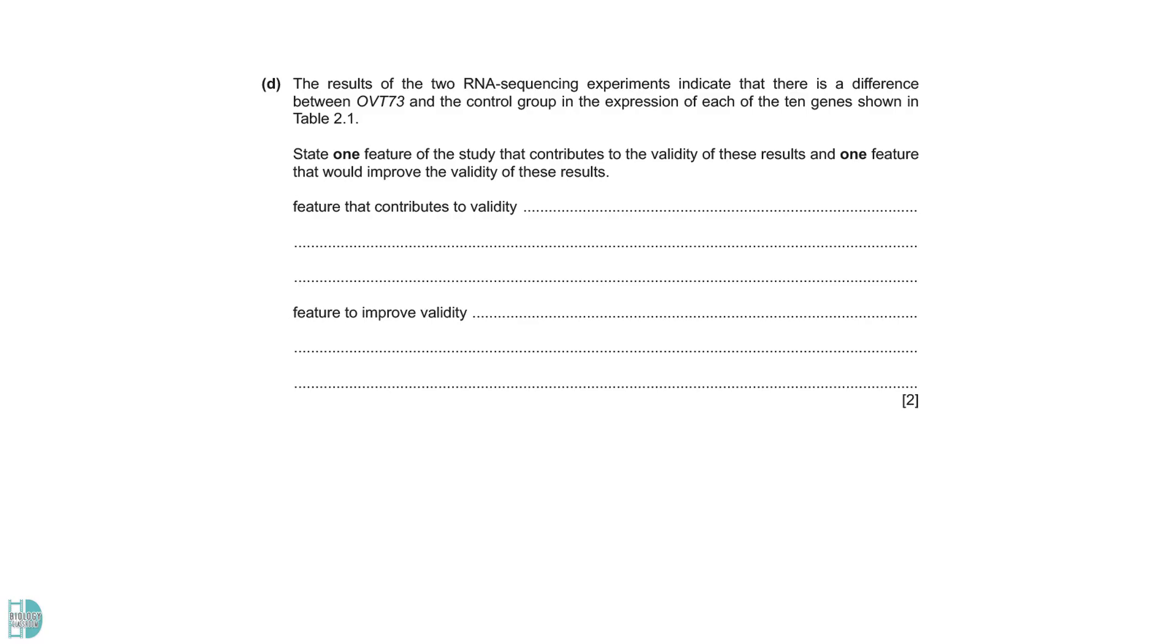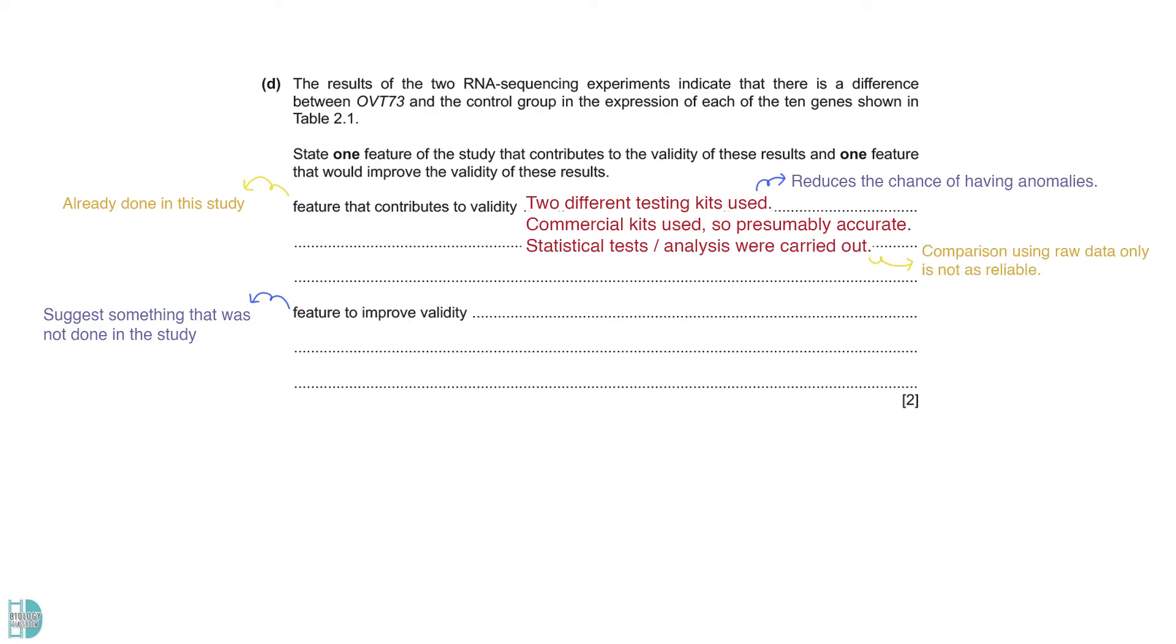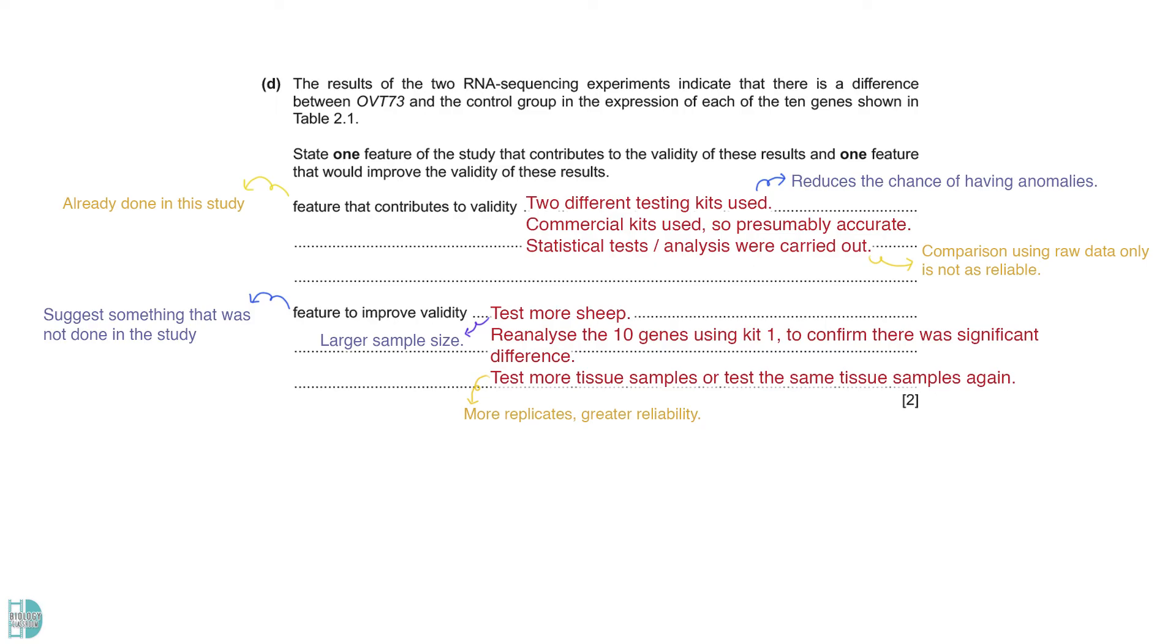Part D: State one feature of the study that contributes to the validity of these results and one feature that would improve the validity of these results. Note that the first question wants you to identify something that has been done to ensure validity while the second question wants you to suggest something that was not done. Firstly, two different testing kits were used instead of only one. This reduces the chance of having anomalies. The kits used are commercial kits so they are probably pretty accurate as they are products that are already in the market. Lastly, statistical tests or analysis were carried out to compare the data. Some improvements can be made including increasing the sample size by testing more sheep. We can also re-analyze the samples using kit 1 as a method to double confirm the results. Lastly, we can test the same tissue samples again to replicate the study to improve the reliability of the data.